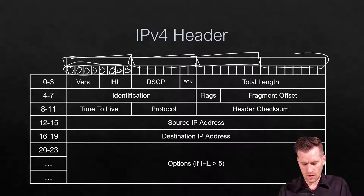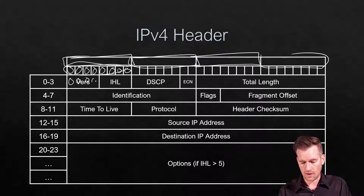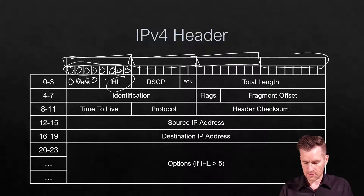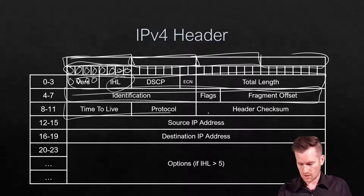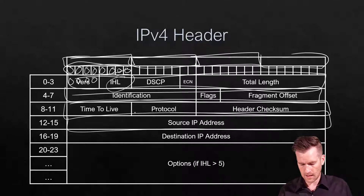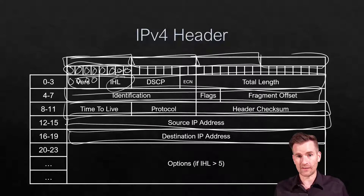Eight bits make up a byte, so a rectangle box here represents a byte of information. The version field is four bits wide. Each line in the diagram is 4 bytes long — for example, bytes 0 through 3, then bytes 4 through 7 — and we'll take a look at how this compares to an IPv6 header.